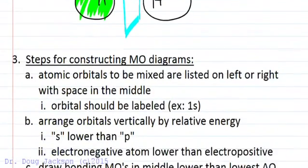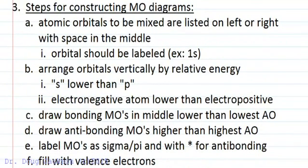For constructing the molecular orbital diagram, we will mix atomic orbitals together and list them on the left or right and leave a space in the middle. The orbitals should be labeled, like the 1s orbital. We want to arrange orbitals vertically by relative energy. S orbitals are lower than p orbitals for the most part, and electronegative atoms have lower energies than electropositive atoms.